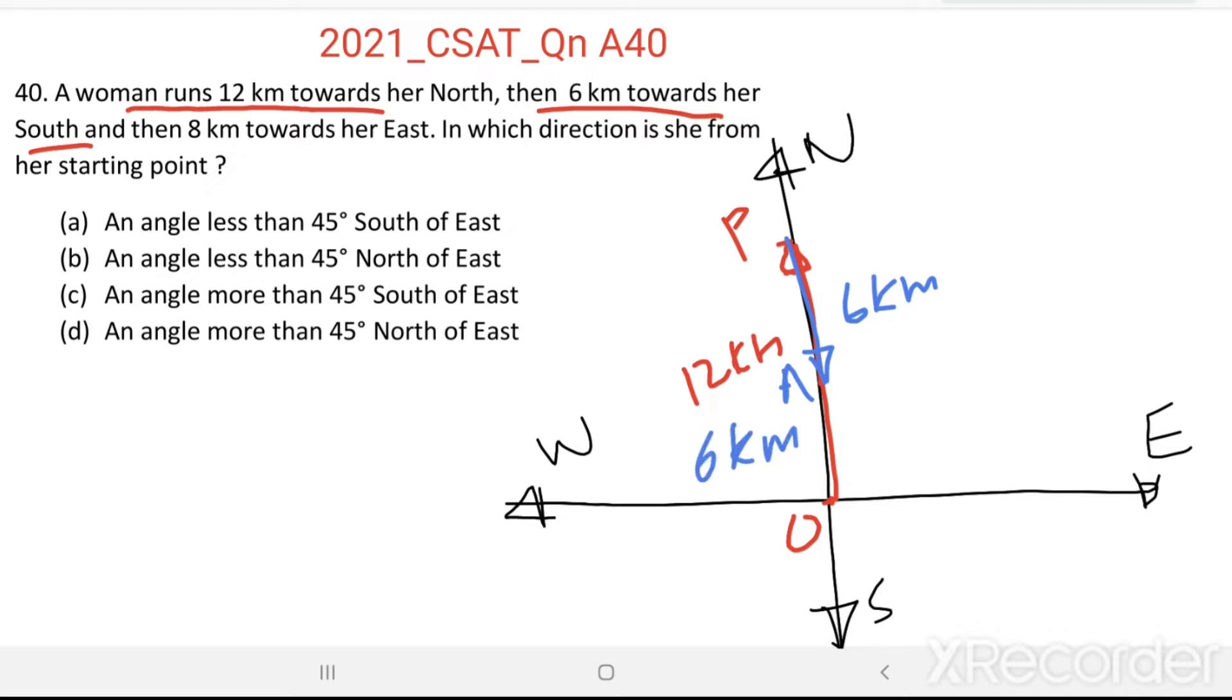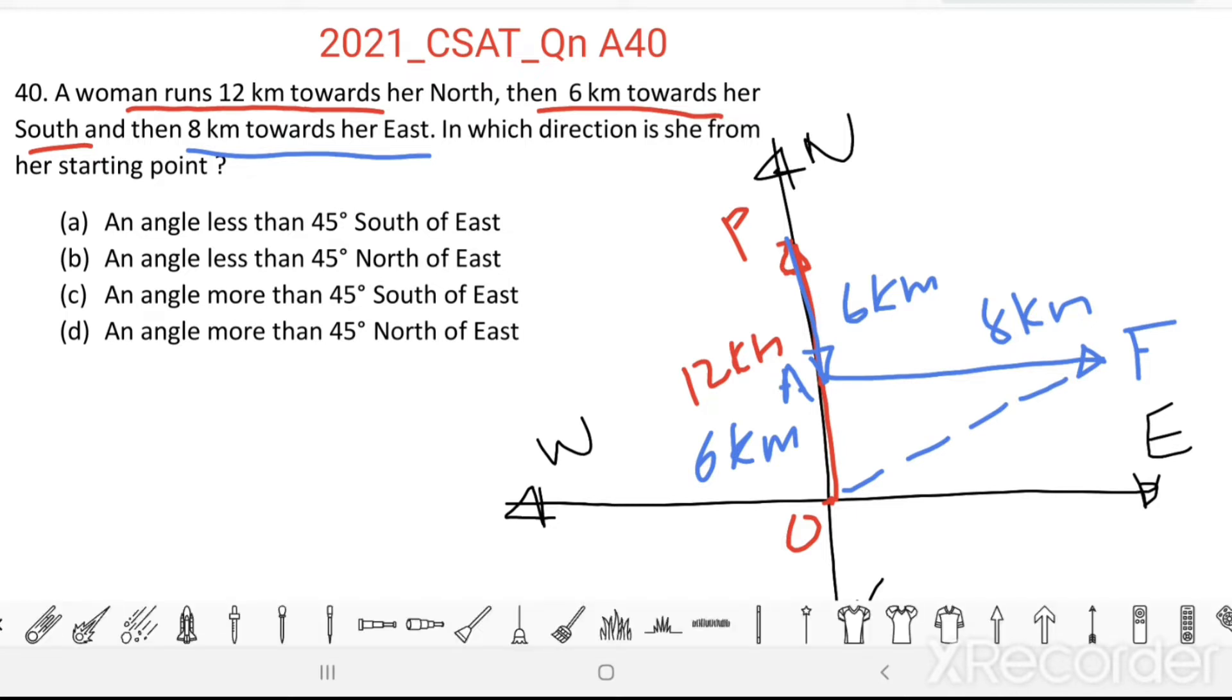Then from A, 8 km towards her east. 8 km towards her east, and finally she reached point F. Joining these points O and F, we get a right-angled triangle OAF.